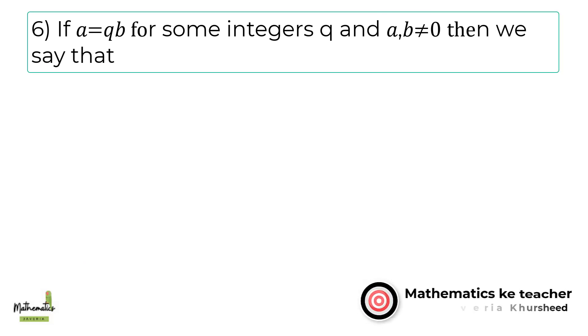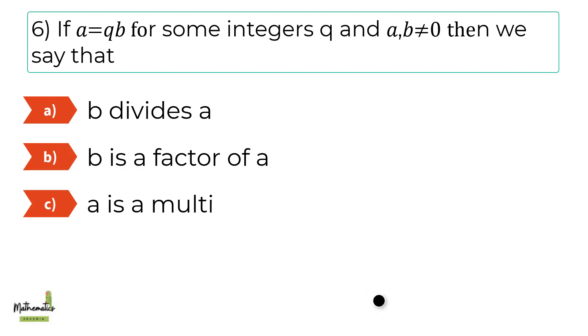Number 6. If A equals QB for some integers Q and AB does not equal 0, then we say A, B divides A. B, B is a factor of A. C, A is a multiple of B. D, all of these.